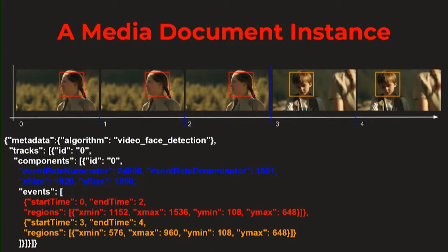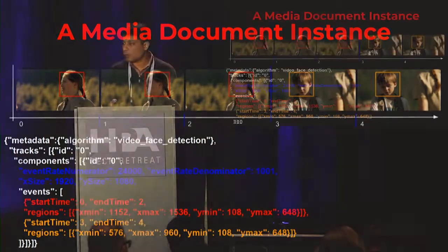This slide lends some tangibility to the data model. Working with a video sequence conducting face detection analysis: the first event corresponds to the red box — the first face detected for the first three frames — and the second event is the orange box. The JSON snippet shown here is a representation of this data in the media document format. The units of spatiotemporal measurements are captured at the component level, highlighted in blue, and the two individual events are captured separately as red and orange colors.